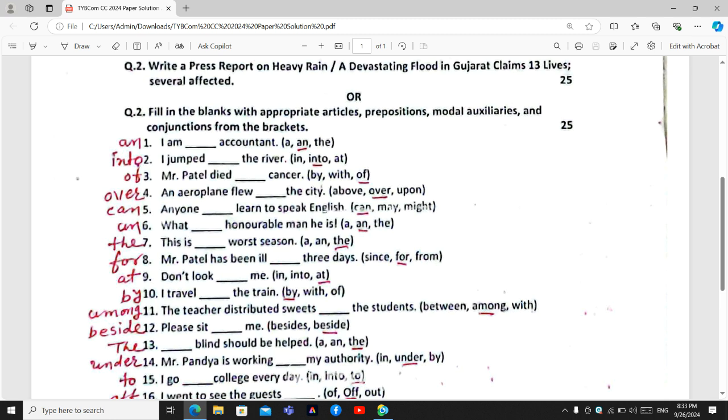Blank number six. What blank honorable man is when he is. Here the word honorable pronoun says O. That means you can write here N. Article N will be here.